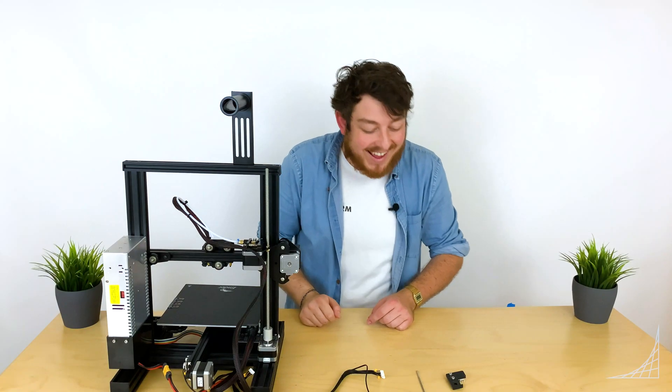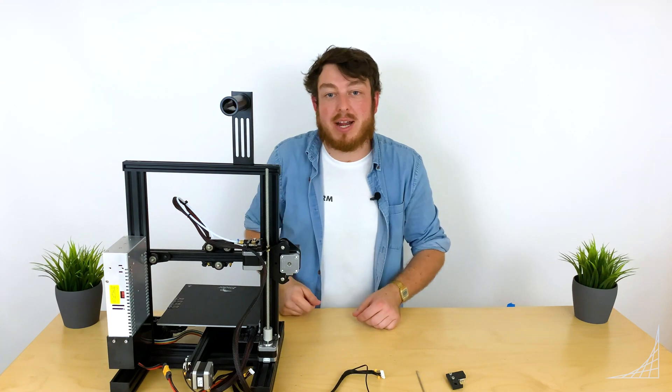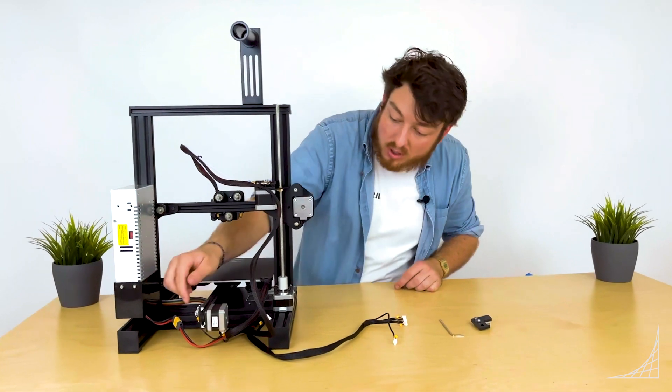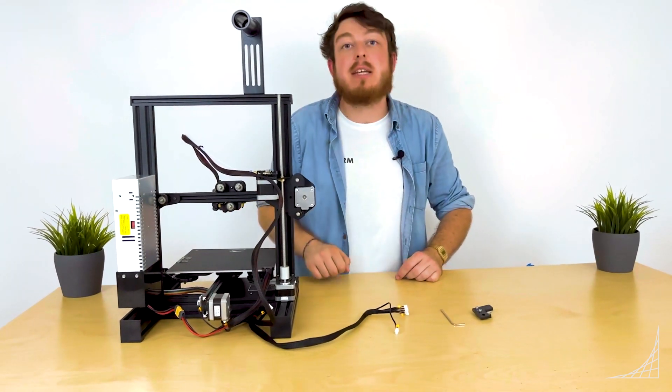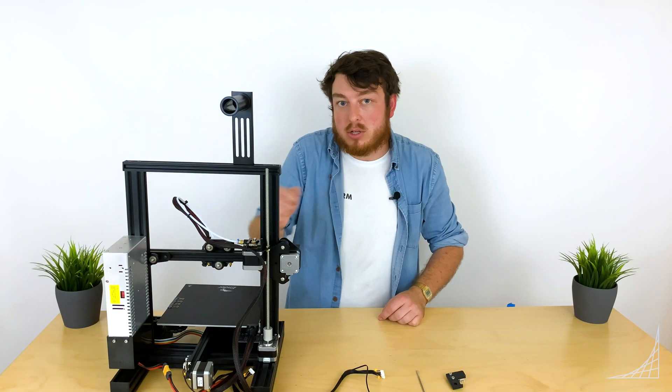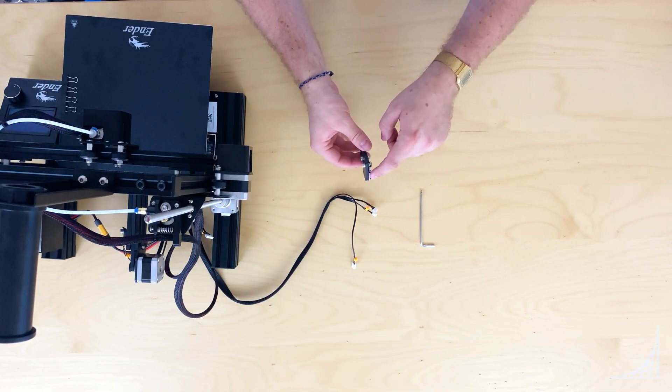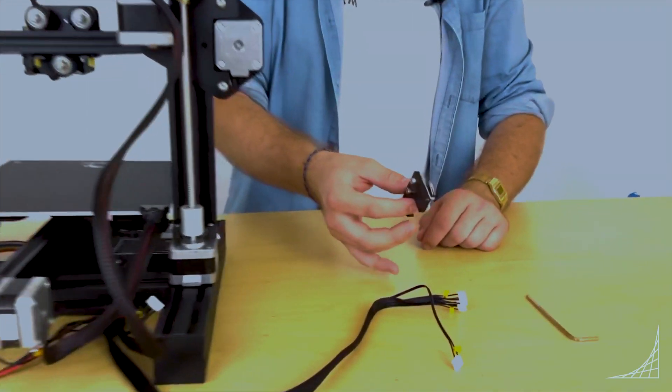You may notice on a couple different places you have little switches, and this is exactly how the machine knows where the nozzle is while you're printing. We have one already pre-attached on the Z motor, one just next to the QR code on the X-axis, and then we're going to be adding on the Z limit switch.